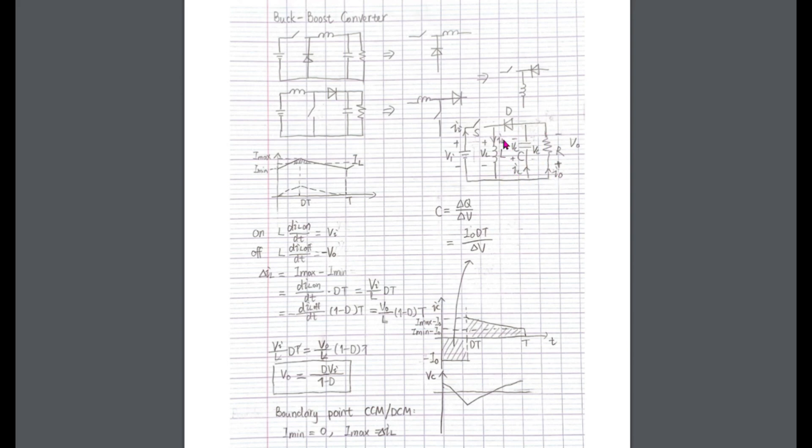So in a steady state, we know the current and voltage waveforms should become periodic, which means the IL at the beginning of the switching cycle should match that at the end. I name this point as I mean and the switching point current value as Imax.